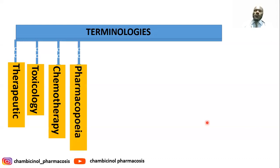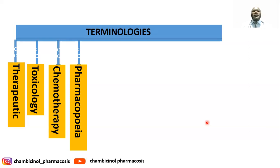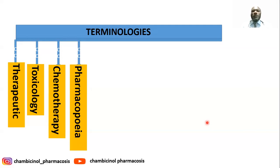We also have the pharmacopoeia, which is the official publication book containing the list of drugs, their effects, uses, and chemical structures. We have different pharmacopoeias, including the Indian Pharmacopoeia, the United States Pharmacopoeia, and the European Pharmacopoeia.